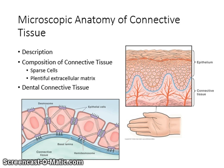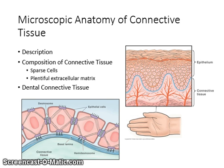Epithelial cell junctions are cellular structures that mechanically attach a cell and its cytoskeleton to neighboring cells or to the basal lamina. Forms of epithelial cell junctions include desmosomes and hemidesmosomes. Desmosomes and hemidesmosomes bind cells together in a fashion similar to Velcro so they can function as a strong unit. A hemidesmosome is simply half of a desmosome.